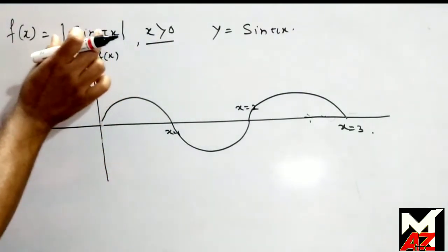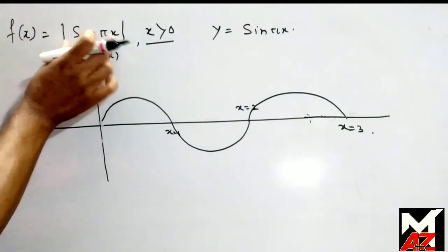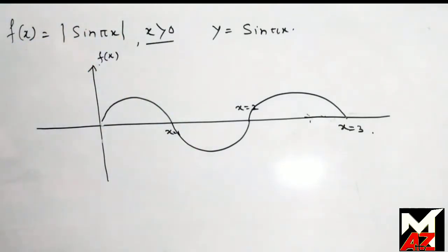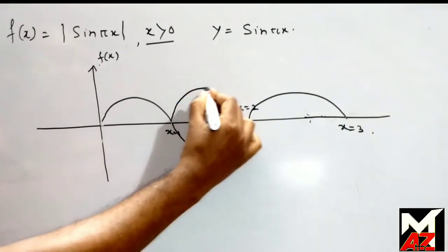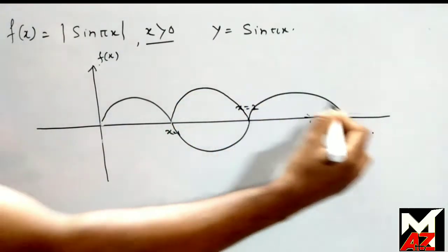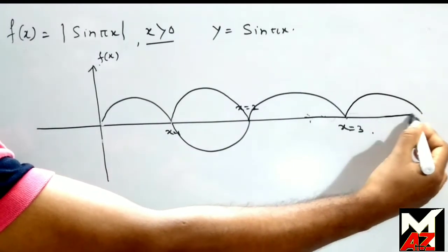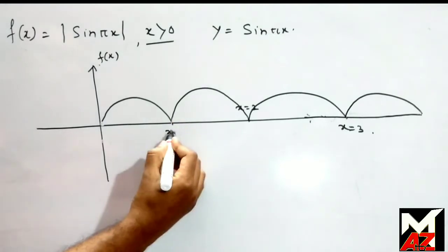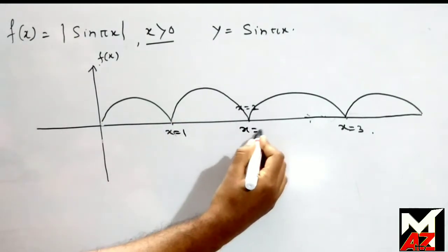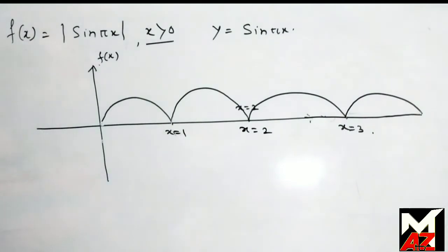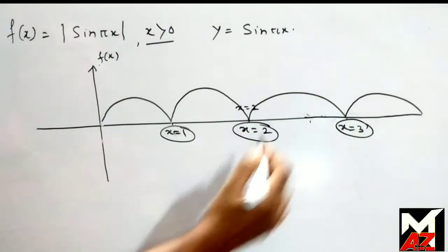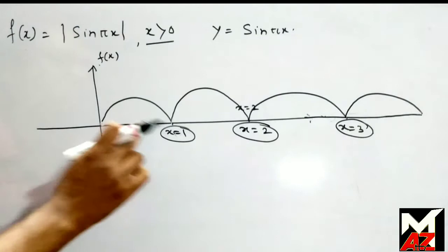Since y = |sin(πx)|, there is no part on the lower side of the x-axis. So this curve is on the upper side — all the waves are on the upper side of the x-axis. At x = 1, x = 2, x = 3, and so on, we cannot draw a tangent to the given curve.